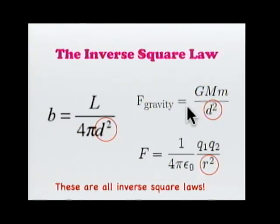The force of attraction gets smaller with the inverse of the square of the distance. The electrostatic force is also an inverse square law. These are all inverse square laws. So this inverse square law is really powerful in astronomy in many different ways.